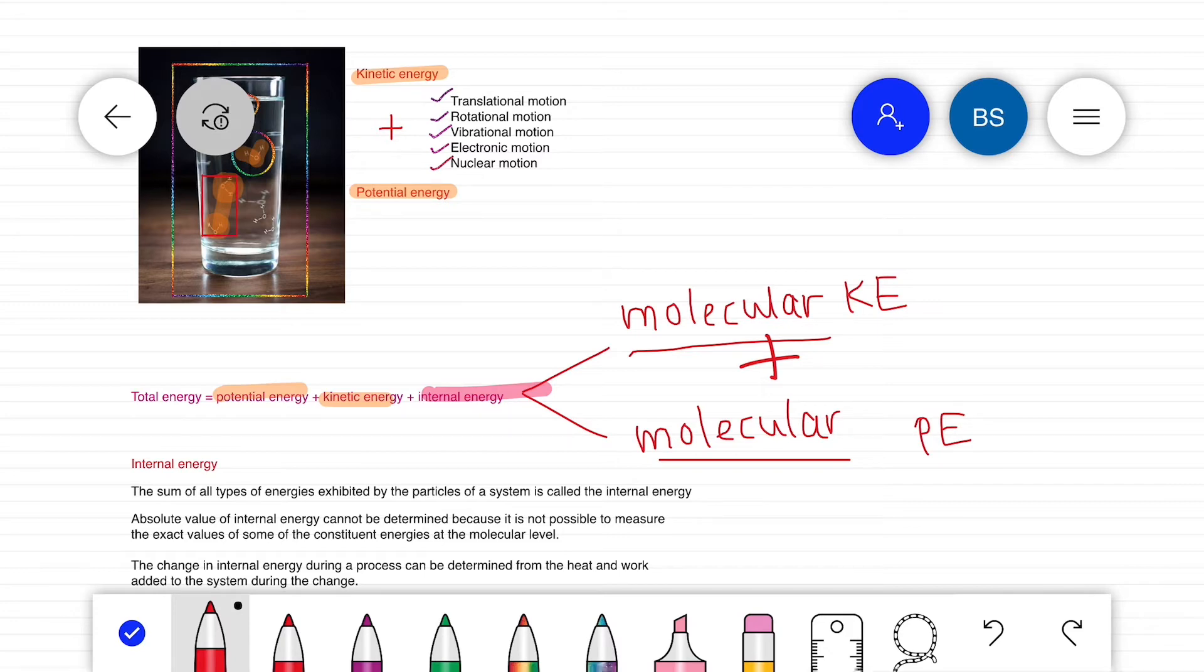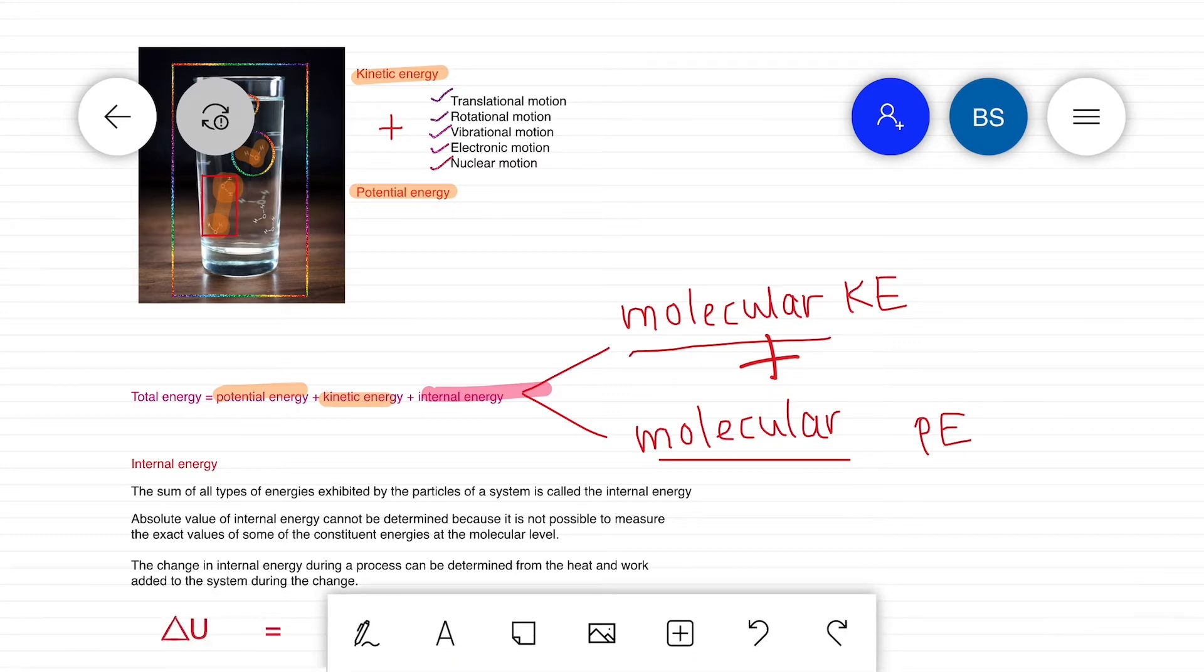The whole system is not moving and it is on the ground. But at the molecular level, we have both potential and kinetic energy.